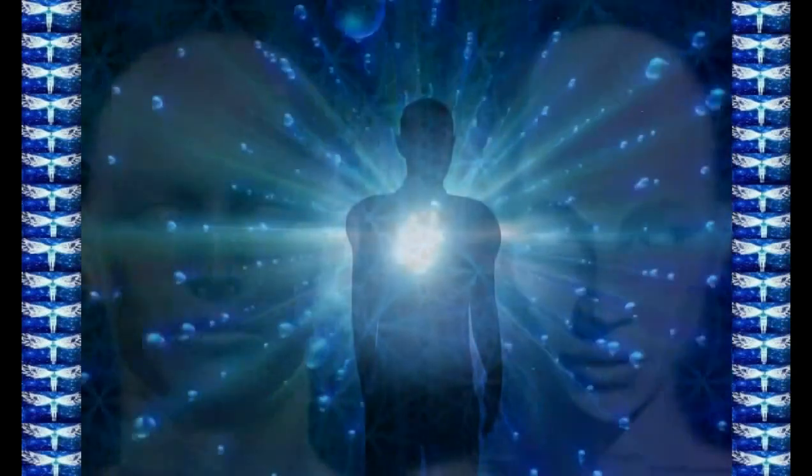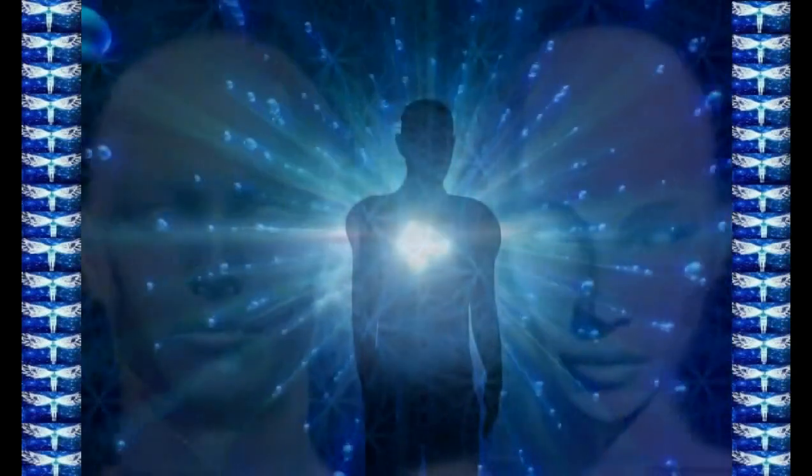The first piece of advice I would like to give you is: learn to move any thought or emotion that arises in your mind to a higher level, to the energy space of your upper chakras. It is very important to bring this skill to automatism. This is the only way you can get rid of the dual perception of the world.